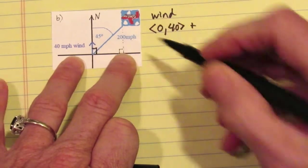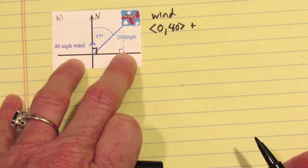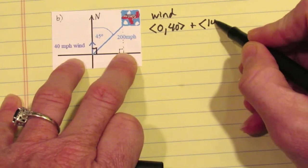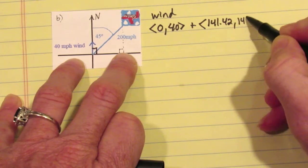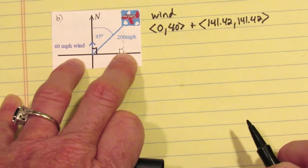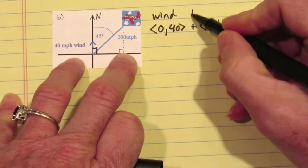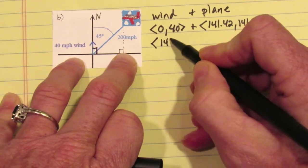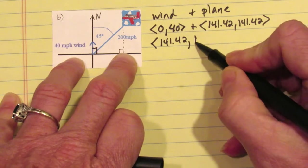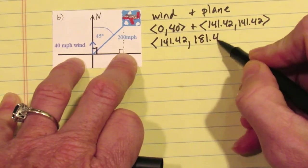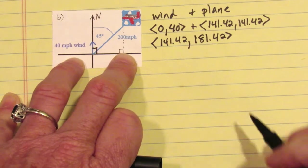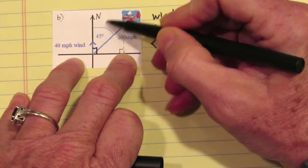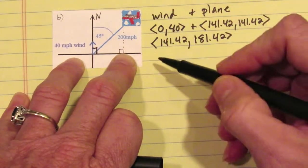You can see it's going directly north and it's still a 40 mile-per-hour wind, so the coordinates are 0 for x and 40 for y. We add that to the plane, whose velocity is the same — we haven't changed its path or speed. Adding the wind to the plane, we get 141.42 for the x component and 181.42 for the y component. This is the new resultant vector, blowing the plane a little more in that direction.